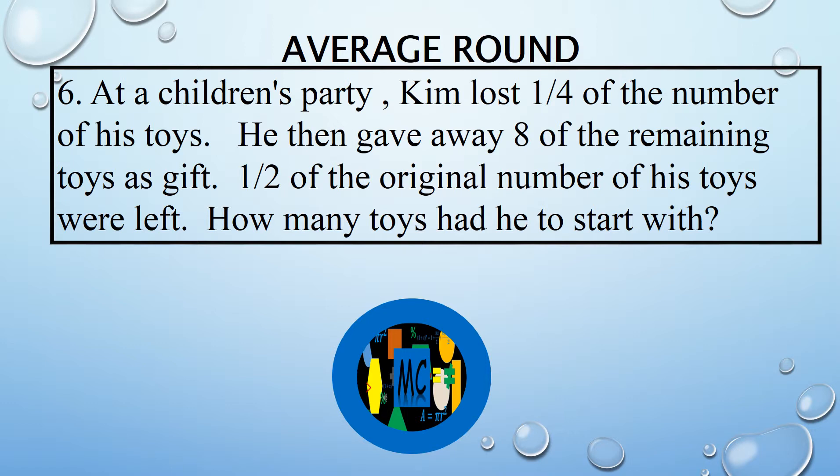At a children's party, Kim lost one-fourth of the number of his toys. He then gave away eight of the remaining toys as gifts. Half of the original number of his toys were left. How many toys had he to start with?